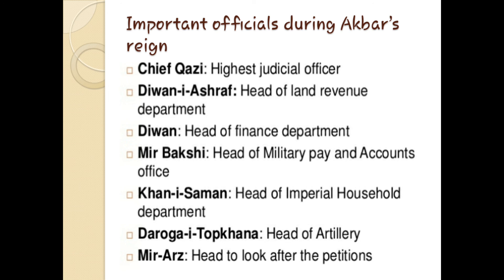Akbar formed departments for the smooth running of government. His important officials included: the Chief Qazi, the highest judicial officer; Diwan-i-Ashraf, head of the Land Revenue Department; Diwan, head of the Finance Department; Mir Bakshi, head of the Military Pay and Accounts Office; Khan-i-Saman, head of the Imperial Household Department; Daroga-i-Topkhana, head of Artillery; and Mir Arz, who looked after petitions.